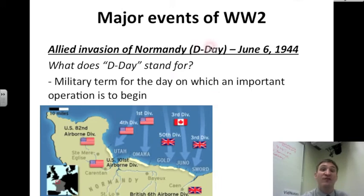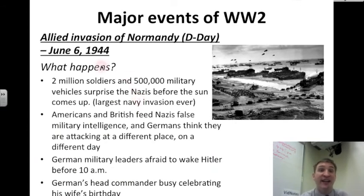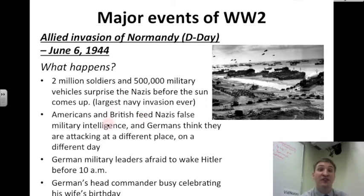What does D-Day stand for? D-Day is actually a military term for the day on which an important operation is to begin. So what happens on D-Day? Two million soldiers and 500,000 military vehicles surprise the Nazis before the sun comes up. It's the largest Navy invasion in the history of the world. Americans and British feed Nazis false military intelligence, and the Germans think they are going to be attacked at a different place on a different day.